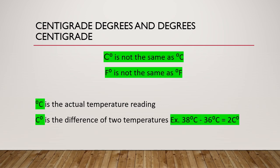Let us discuss about centigrade degrees and degrees centigrade — these are different. Degrees centigrade is the actual temperature reading; for example, the thermometer reads one degree centigrade. On the other hand, centigrade degrees is the difference of two temperatures. For example, 38 degrees centigrade minus 36 degrees centigrade is equal to two centigrade degrees — meaning it is the change in temperature.